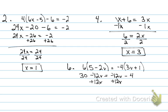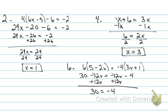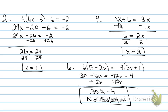What is left will tell me which one it is. On the left side, 30 remains. On the right side, negative four remains. Is it true that 30 equals negative four? No — so my answer is no solution. If the numbers did equal each other, it would be infinite solution.